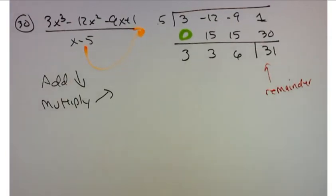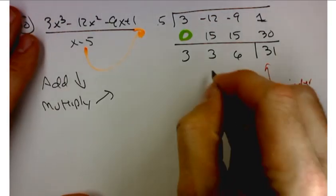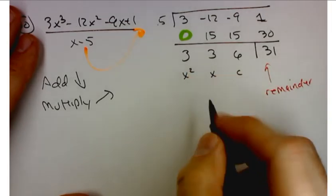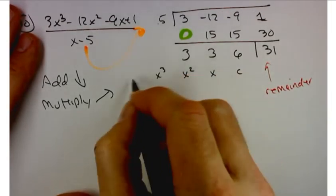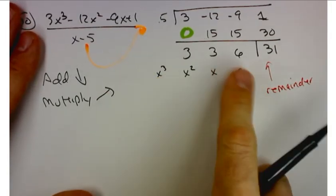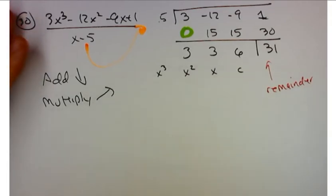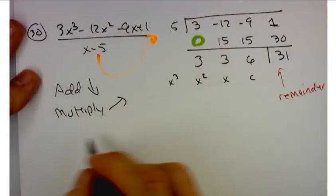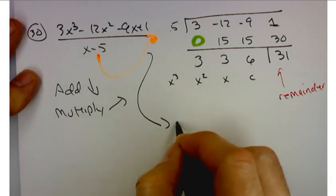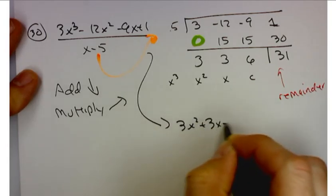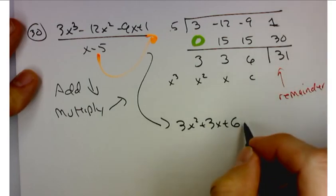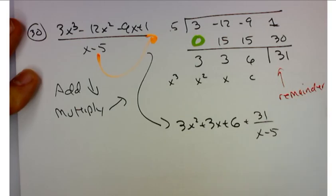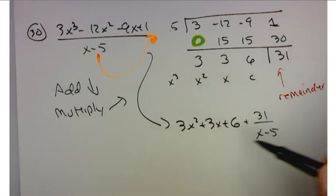The other terms represent your quotient. This is your constant term, this is your coefficient of x, and that's your coefficient of x² — it increases from right to left, just like reading Arabic from right to left. So when I divide this by this, I end up with 3x² plus 3x plus 6, and the last term is your remainder, so put it over the divisor: 31 over x minus 5. There's your quotient and your remainder.